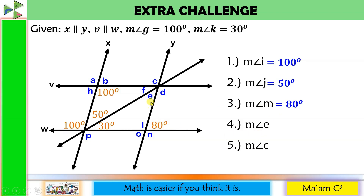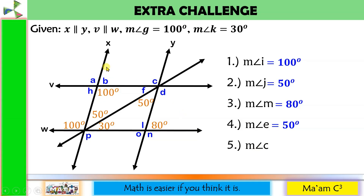Next: angle E. Line V and line W are parallel lines and this is a transversal. If this is 50 degrees, then angle E is also 50 degrees — alternate interior angles. Last one is angle C. Here is angle C. If this is 100 degrees, then this is 80 degrees. If this is 80 degrees, then angle C is 100 degrees because they are same-side interior angles.